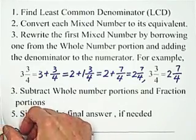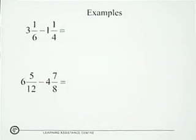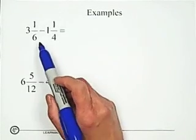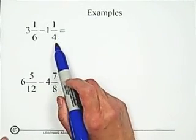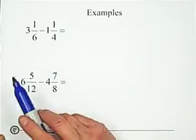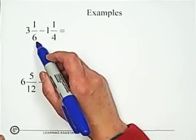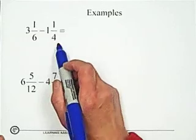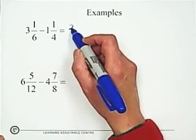Let me show you 2 examples. The first example, 3 and 1 over 6 minus 1 and 1 over 4. First, find least common denominator with 6 and 4 is 12.